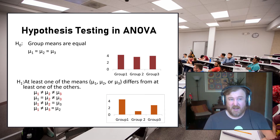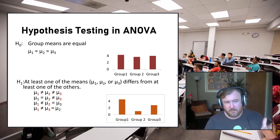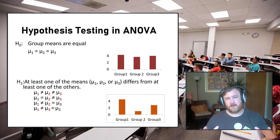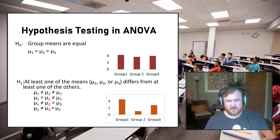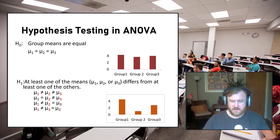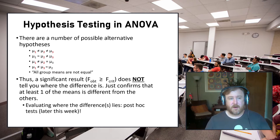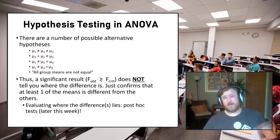One way to write the null hypothesis is to spell it out: 'group means are all equal,' or in computational form: μ1 = μ2 = μ3. The alternative in computational form can get complex because it could be any combination of means differing. With three levels there are four different possibilities for the alternative, so it's typically easier to simply write 'all group means are not equal' — this stays consistent across every single test.